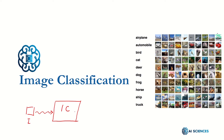This image classification system produces one of a predefined set of categories. For example, in this particular case, all the images belong to one of these categories: airplane, automobile, bird, cat, deer, dog, frog, horse, ship, truck. By the way, this dataset I am referring to is the CIFAR-10 dataset with 10 classes.